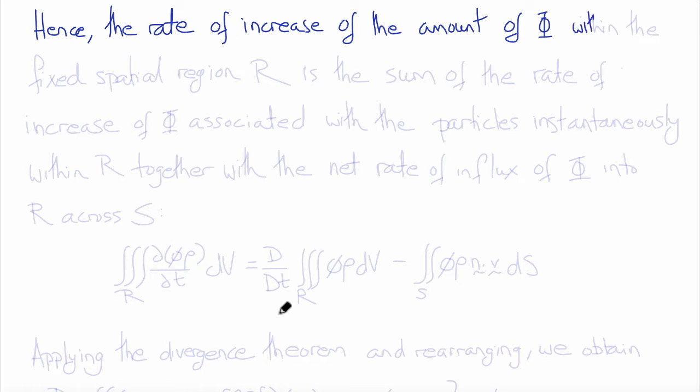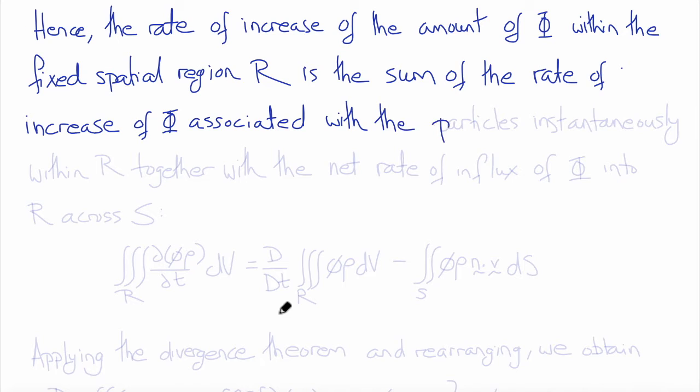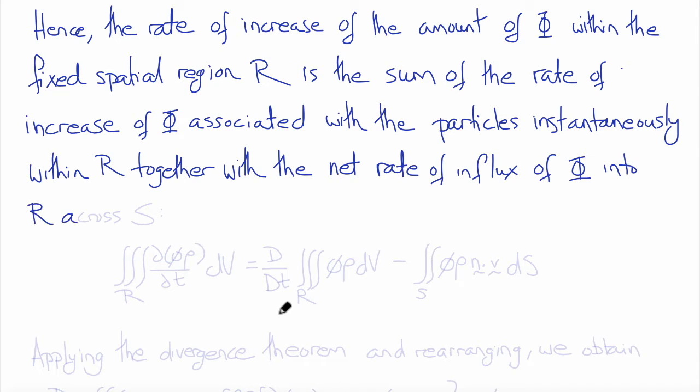Hence we can write an expression for the rate of increase of the amount of capital phi within the fixed spatial region R, as being the sum of the rate of increase of phi associated with the particles instantaneously within R, together with the net rate of influx of phi into R across the boundary of R, S.